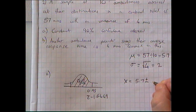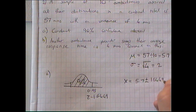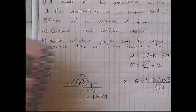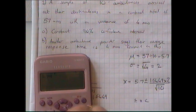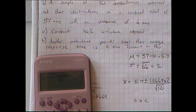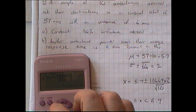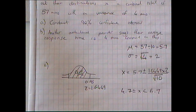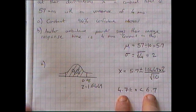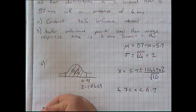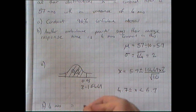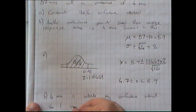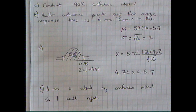From the table, 0.95 gives a z value of 1.6449. Putting that into the formula: x equals 5.7 plus or minus 1.6449 times 2 divided by the square root of 10. That gives an upper value of 6.7 and a lower value of 4.7. I'm 90% confident the response time will be between those two values. Another ambulance provider claims an average response time of 4 minutes — 4 minutes is outside my confidence interval, so I would reject that.